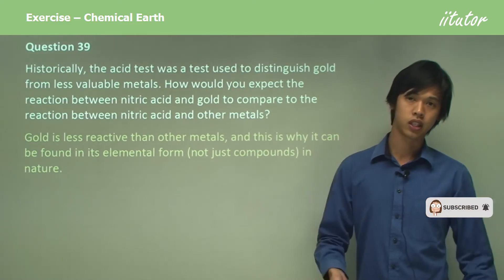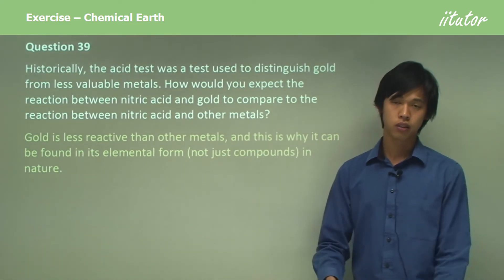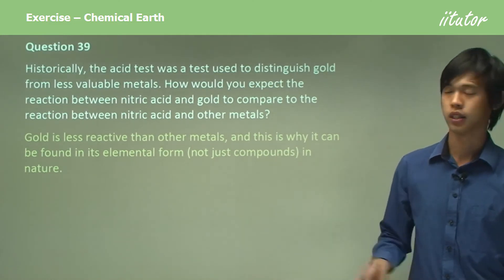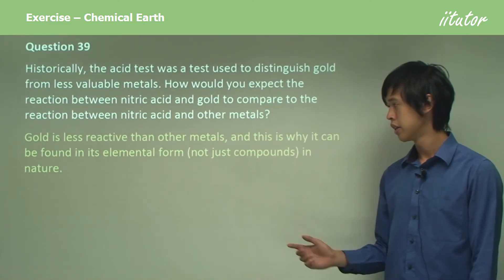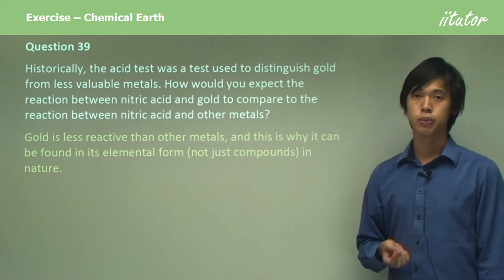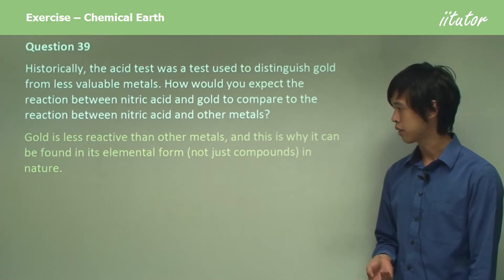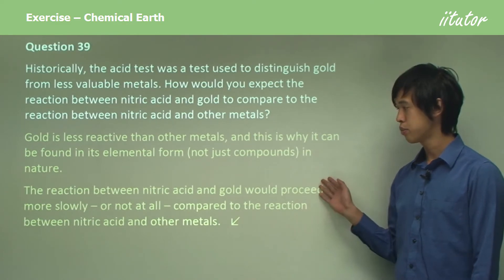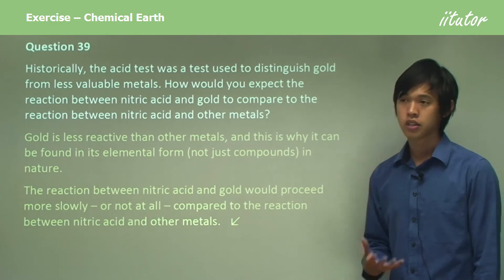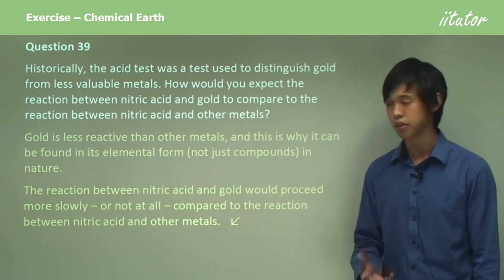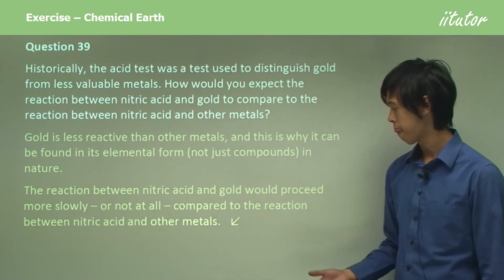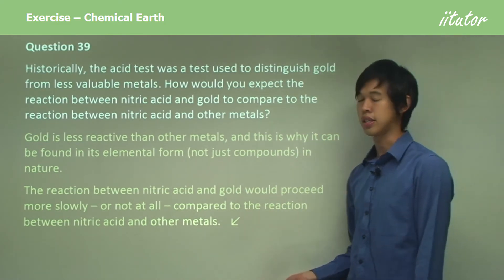So if I went down the river gold panning, I could actually find a lump of pure gold and then go and make myself a fortune by selling it. It's very unreactive, and that's why we can find it in its elemental form sometimes. The reaction between nitric acid and gold would proceed more slowly or not at all. So if there is a reaction at all, it would be very slow, and it's not likely that there will be a reaction, compared to the reaction between nitric acid and other metals.